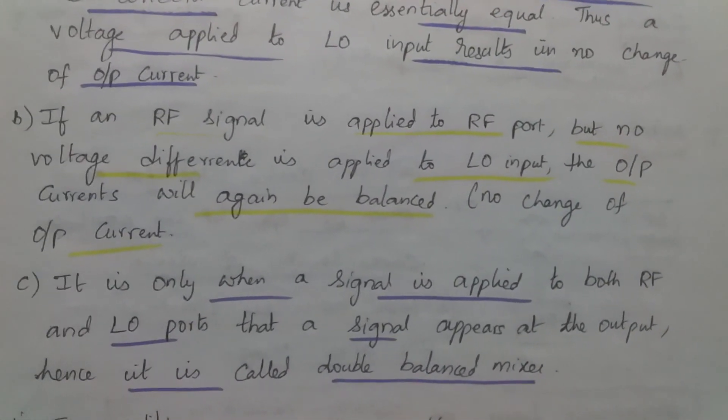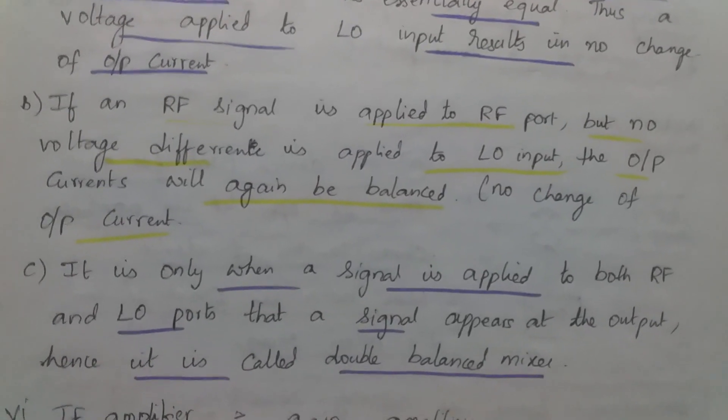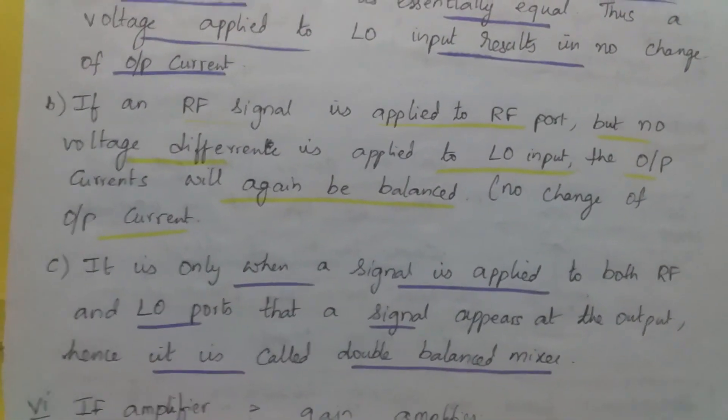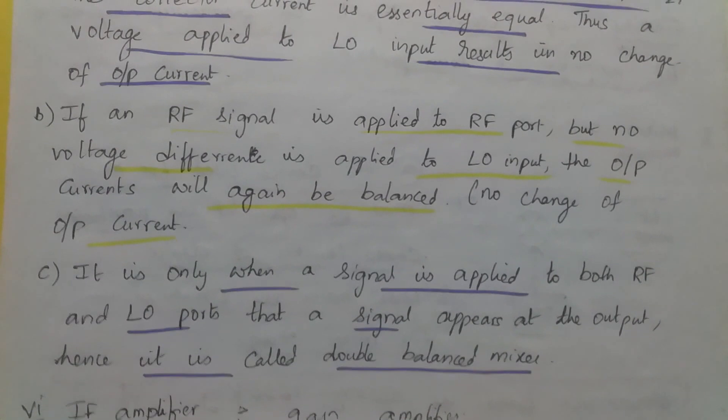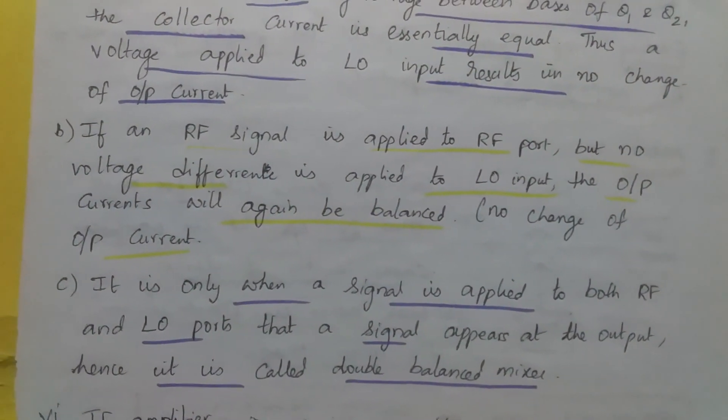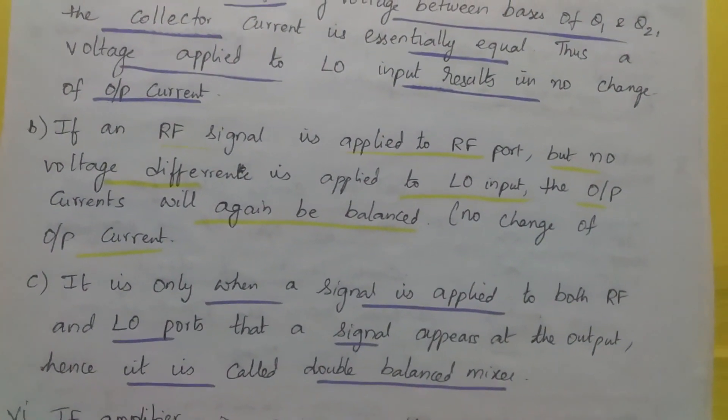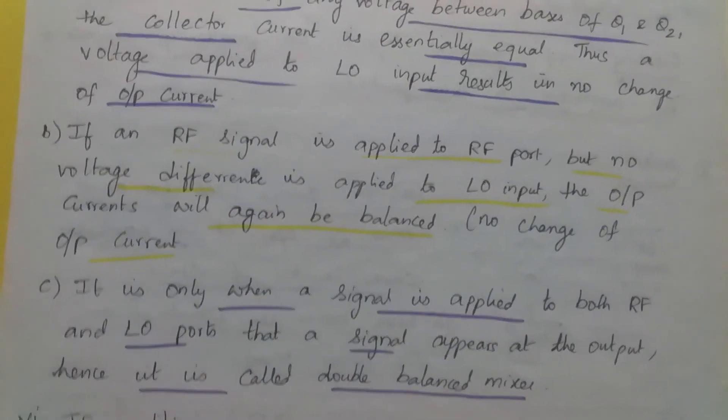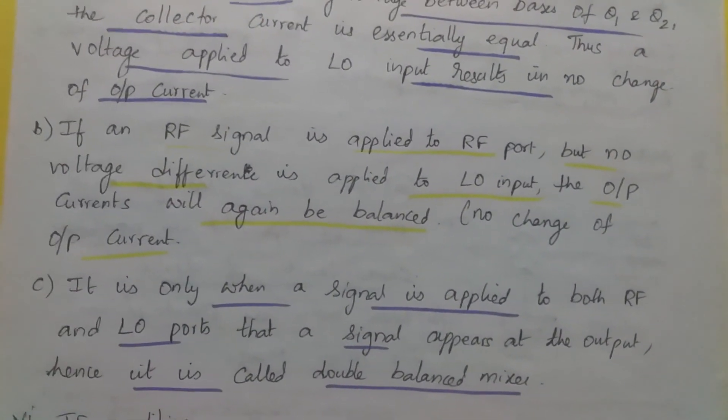In the next session, we will discuss IF amplifiers, AGC, and the detector circuit. We will further discuss different types of FM discriminators. That's all for this session. Thank you and I wish you all the best.